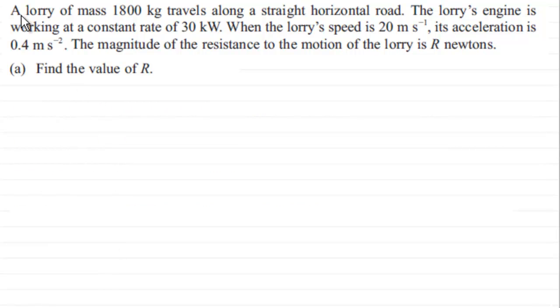In this first part, we're told that a lorry of mass 1800 kilograms travels along a straight horizontal road. The lorry's engine is working at a constant rate of 30 kilowatts. When the lorry's speed is 20 meters per second,